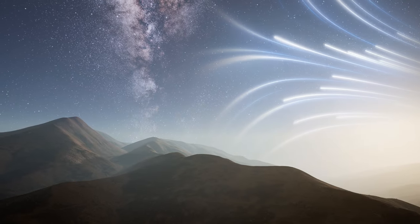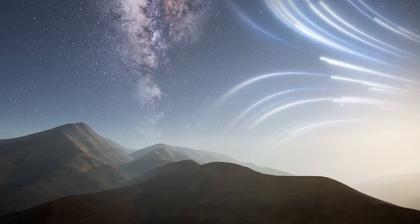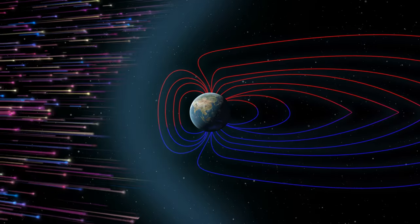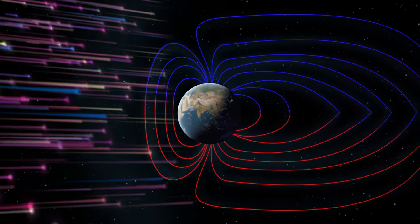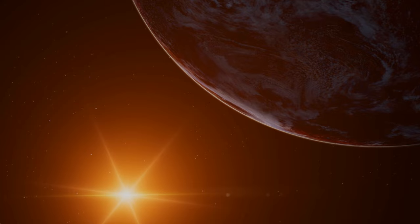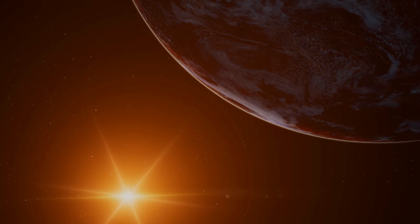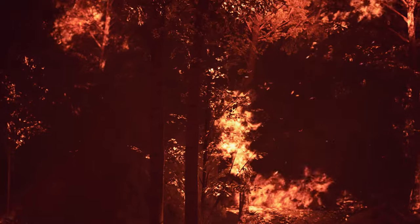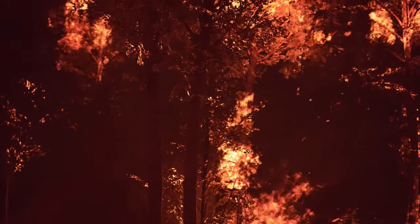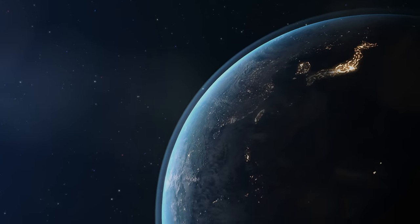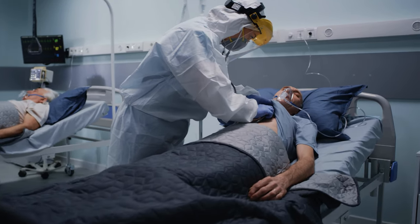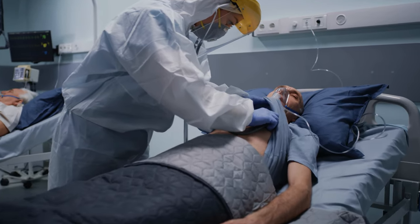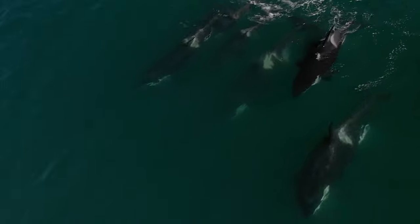However, during a geomagnetic field inversion, this protective shield is significantly weakened. This weakening can lead to an increase in the radiation impact on the Earth's surface. The potential consequences of such increased radiation are profound. It can affect climatic conditions, potentially lead to dramatic changes in weather. Elevated radiation can also have biological consequences, affecting everything from human health to the behavior of animals, especially those that use magnetic fields to navigate.